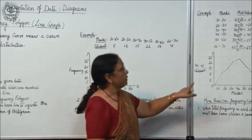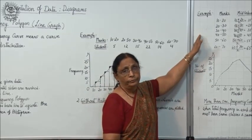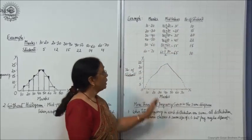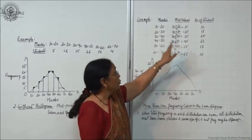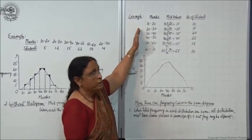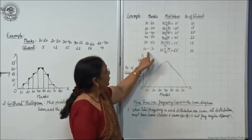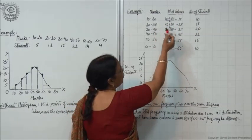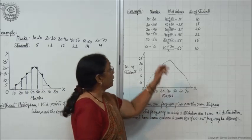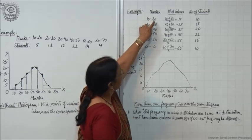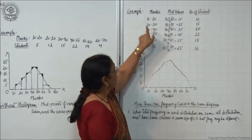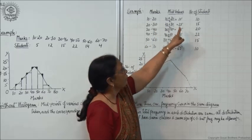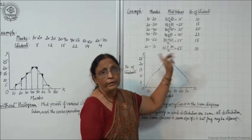Now we take another example for this. Here, marks and number of students data is given. You have to calculate the midpoints or midvalues of the class intervals. For 10 to 20, calculate: 10 plus 20 divided by 2. For 20 to 30, it is 20 plus 30 divided by 2. This way, all class intervals are divided by 2 and we get the midvalues: 15, 25, 35, 45, 55, and 65.